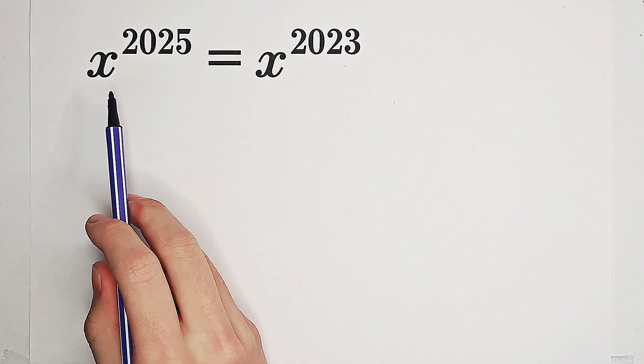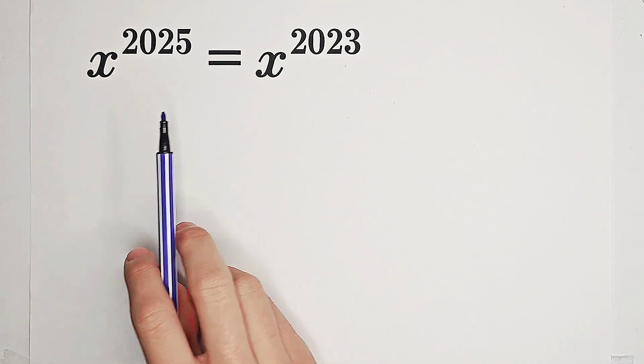Solve for x such that x^2025 = x^2023, which I'll do first.